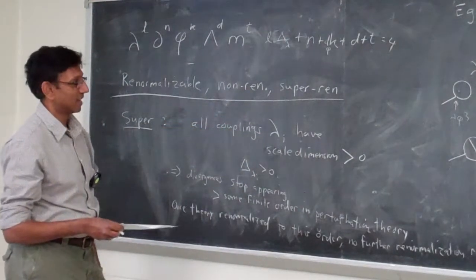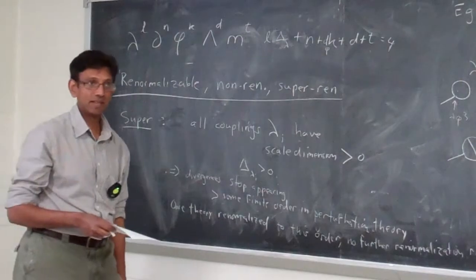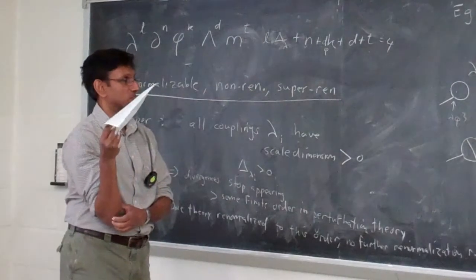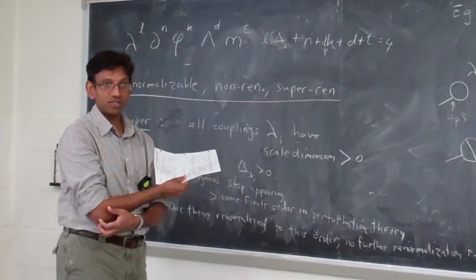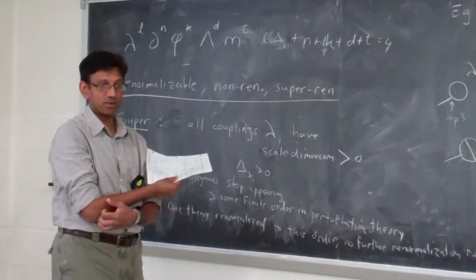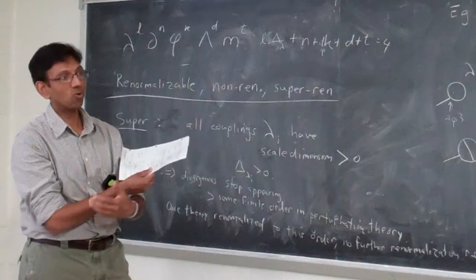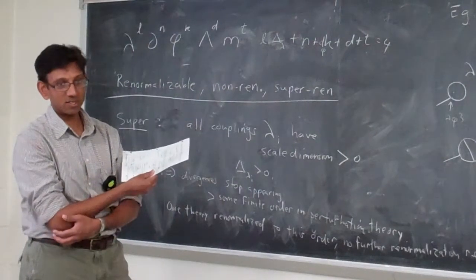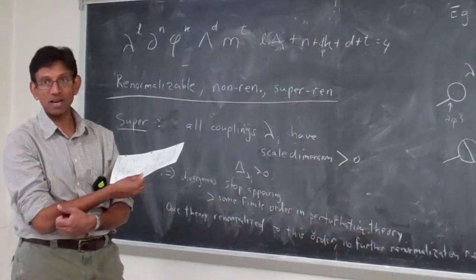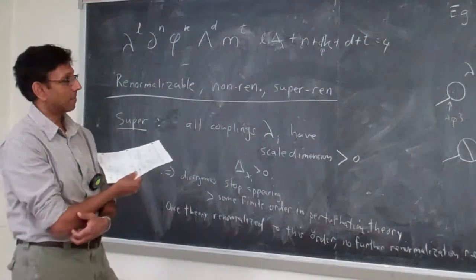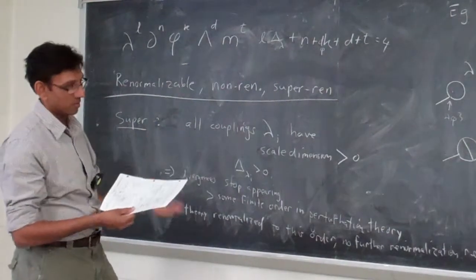It happens more often in lower-dimensional field theories, whether as a theoretical laboratory or because it turns out to be the long-wavelength limit of some condensed matter field theory. That is a useful thing to keep in mind. But then there's the regular renormalizable case.